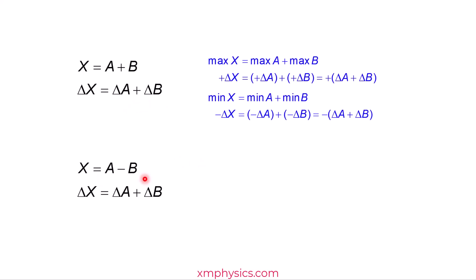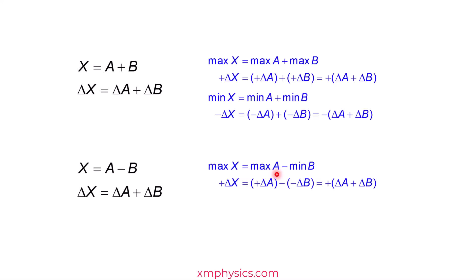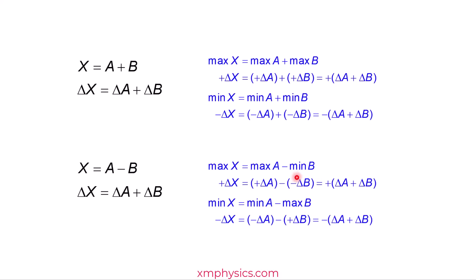Let's use the same logic for X equals A minus B. This time, the maximum value of X occurs when A is at its maximum value and B is at its minimum value. And the minimum value of X occurs when A is at its minimum but B is at its maximum. So we get a double negative and a minus-plus situation. Because of that, the maximum positive deviation is also delta A plus delta B, and the most negative deviation is also delta A plus delta B. That's why delta X is still delta A plus delta B — not minus.